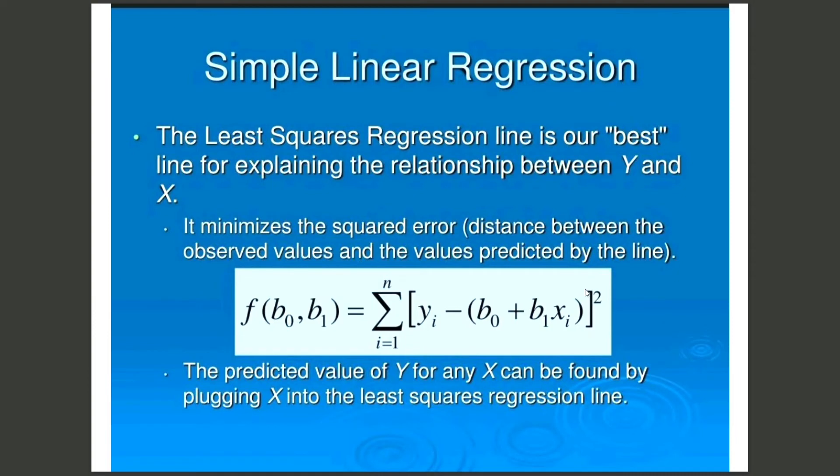Simple linear regression: The least squares regression line is our best line for explaining the relationship between Y and X. It minimizes the squared error distance between the observed values and the values predicted by the line. That is f of b0, b1 equals summation from i equals 1 to n of yi minus b0 plus b1 xi whole squared. The predicted value of Y for any X can be found by plugging X into the least squares regression line.